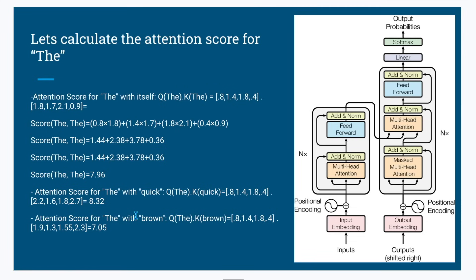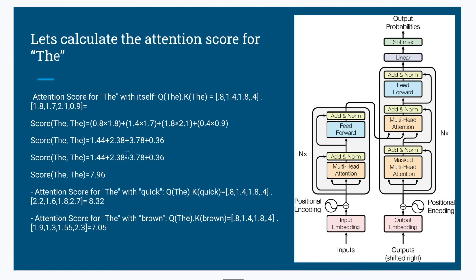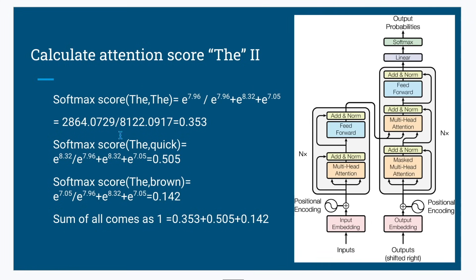Like this, we do this with all our tokens. In this example we take only three tokens, but suppose there are a hundred tokens — this gets calculated with all 100 tokens. After calculating the dot product scores 7.96, 8.32, 7.05, we apply softmax — e raised to 7.96, etc. — to get a relative probability score. The sum of probabilities for the three tokens comes to one.